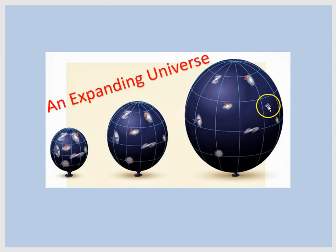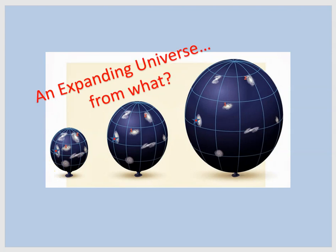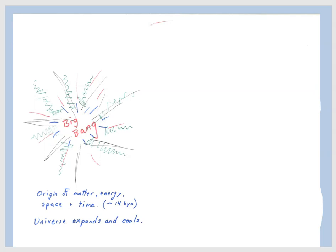And so this led to the idea that if all galaxies today are moving away from each other, in the past, the universe must have been smaller and smaller until you get to some point where, well, what did it originate from? And so we get back to the concept of the Big Bang. This was the origin of matter, energy, space, and time, some 13.8 billion years ago.